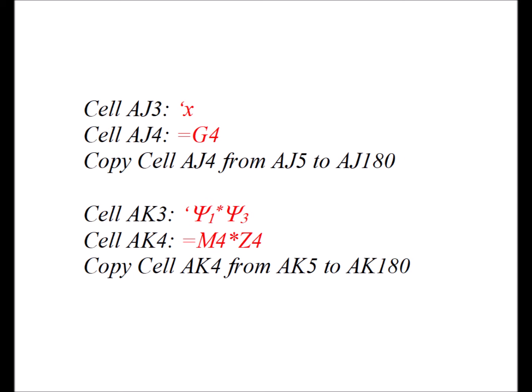This is the third example of the orthogonality of the eigenfunctions. In cell AJ3, we have the label x. In cell AJ4, we have the formula equals G4, and then we copy cell AJ4 from AJ5 to AJ180. In cell AK3, we have the label psi1 star psi3 — the orthogonality of the eigenfunctions for n equals 1 and n equals 3. In cell AK4, we have the formula equals M4 times Z4, and then we copy cell AK4 from AK5 to AK180.